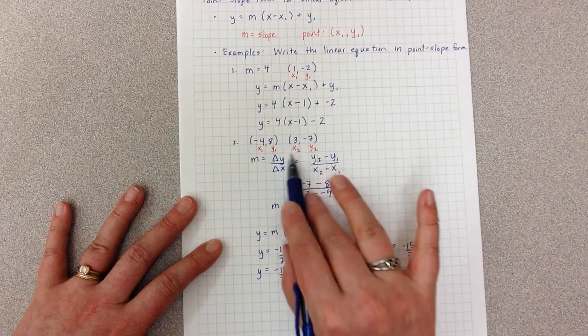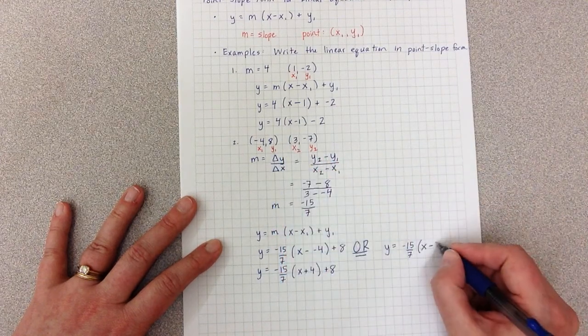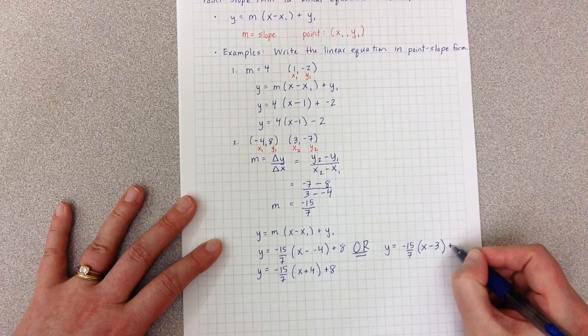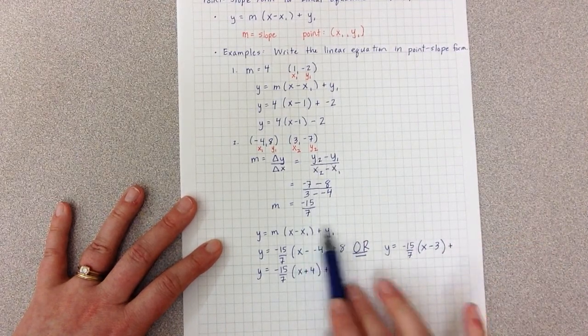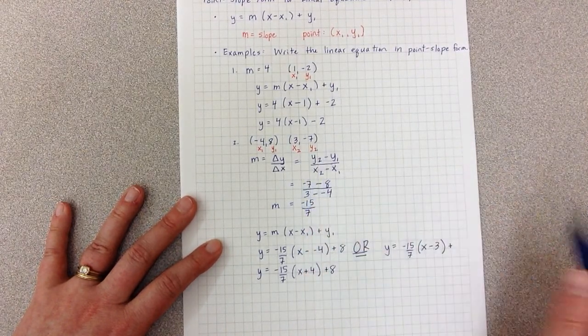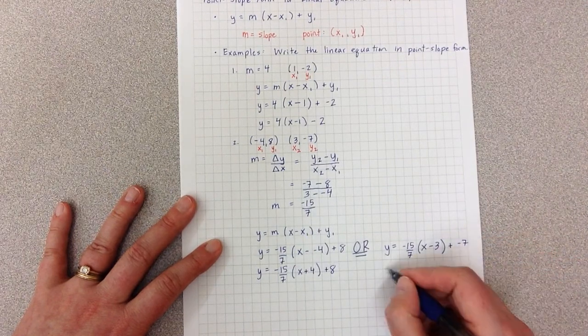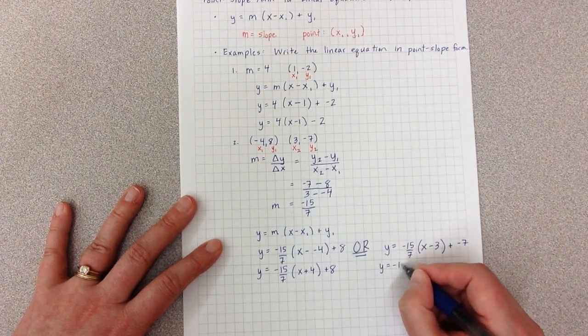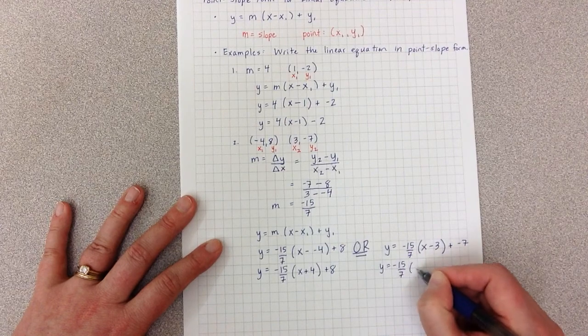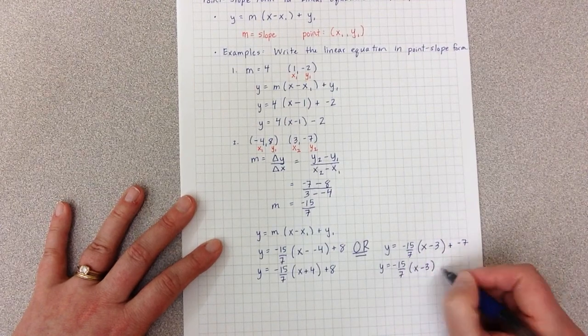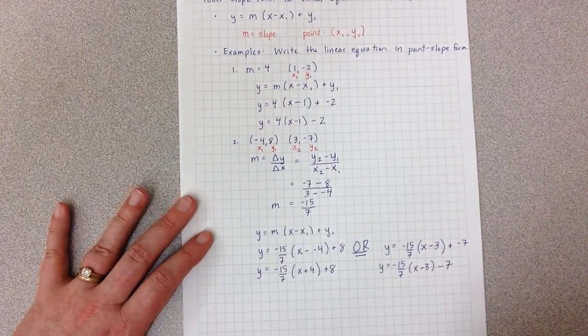So now I have x minus whatever my x1 is, which in this case we're using this as our point, so 3, plus whatever our y value is, negative 7. And again, I'll just clean this up slightly so that we just say that this is minus 7.